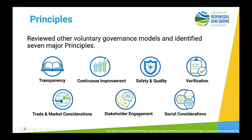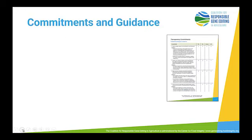Five of those — transparency, continuous improvement, safety, quality, verification, and stakeholder engagement — are common among many other programs. What we think is unique to this one are trade and market considerations and social considerations. Social considerations was absolutely essential, as many of the questions that food companies and retailers receive about the technology really don't have anything to do with technical merits or safety, but with potential social considerations. So it was important to integrate that into the framework's principles.